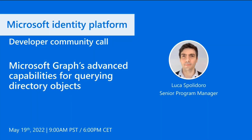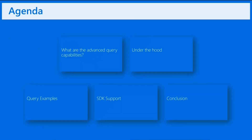Hi everyone, I'm Lucas Polidoro. I'm a Program Manager in the Microsoft Identity Platform. Today we are talking about all the capabilities that we added for querying directory objects with Microsoft Graph. This is the agenda for today: we introduce what these advanced query capabilities are, then we deep dive a little bit under the hood, talk about some query examples so you know how to practically use these new capabilities, and also we will talk about the SDK support for this.